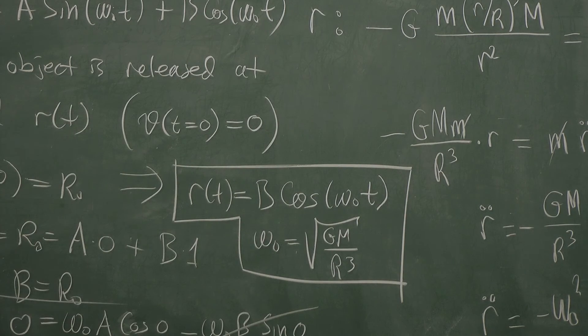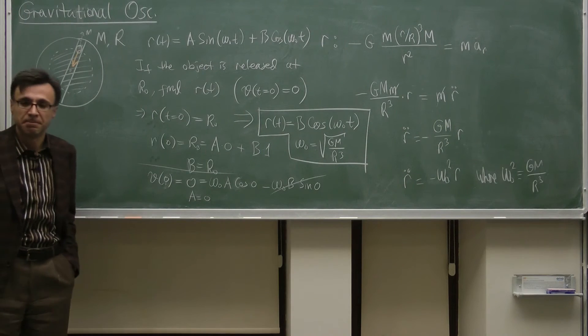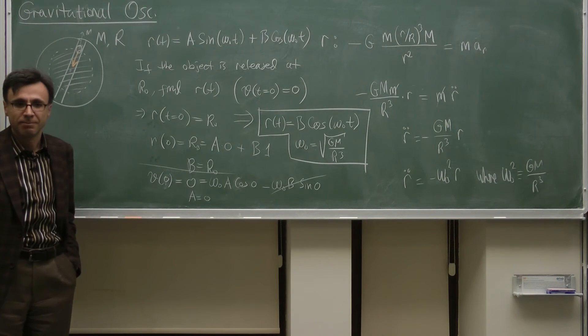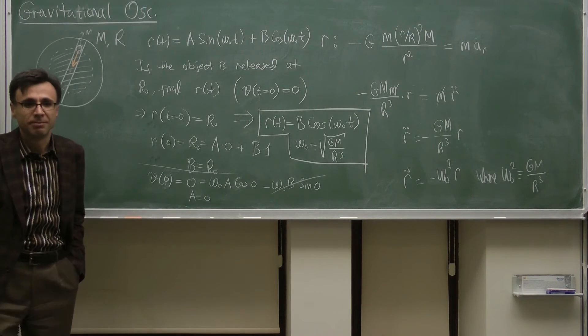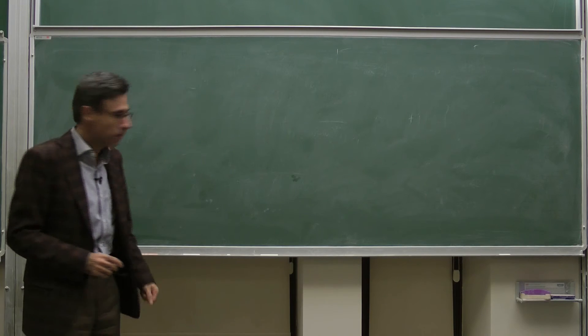So the final solution for that case is r(t) = B cos(omega_0 t), with omega_0 equal to the square root of G times M divided by R³. That's the answer for this gravitational oscillator. Now let's have an example.